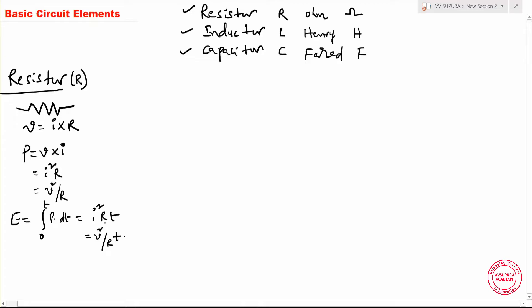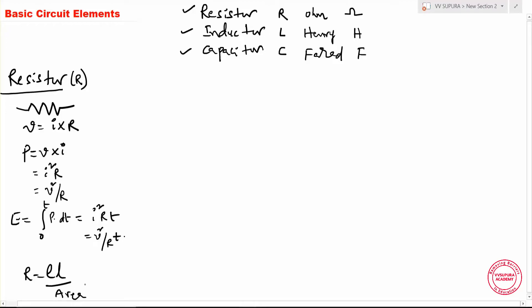If you want to calculate the resistance of any element, we can use the formula R is equal to rho times l divided by A, where l is the length of the conductor. If the length is longer, the resistance increases. A is the area of cross-section — the conductor size. Resistance depends on both length and cross-sectional area. The resistor opposes the flow of current and dissipates heat energy.